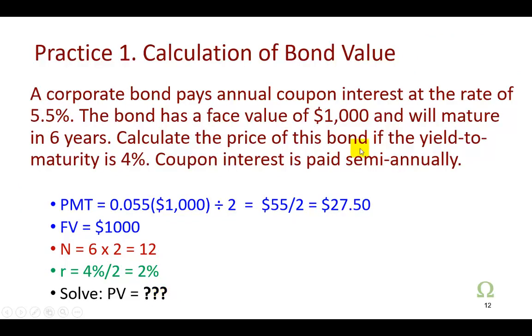Anyhow, here's a practice for you. It says a corporate bond pays annual coupon interest rate at the rate of 5.5. Face value is $1,000. Maturity is six years. Yield to maturity is four. So I've kind of laid it out here for you. So go ahead and check it out and find what the value is. And that's it.